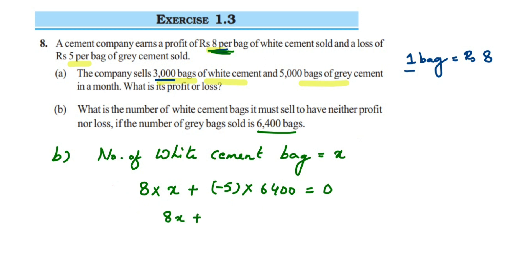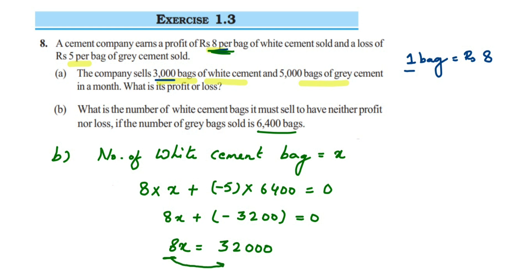Multiplying 5 and 6,400 gives 32,000, so the equation becomes 8x minus 32,000 equals 0. Transposing minus 32,000 to the other side, the sign changes to plus: 8x equals 32,000. Now transposing 8 to the other side, it becomes division: x equals 32,000 divided by 8. Since 8 fours are 32, this gives us 4,000.